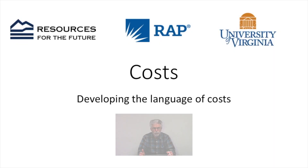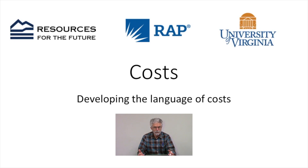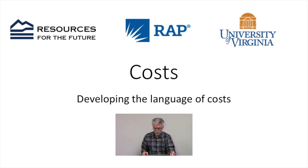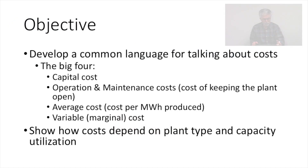Our purpose in this module is to develop a language of cost that we can use for thinking about when we want to use different generating assets, or when we might want to build new generating assets. But in order to get to those really important questions, the first thing we have to do is reach agreement on what we mean by costs. So we're going to spend a lot of time developing a language of costs and being very clear about what we mean by different kinds of costs and when we use different kinds of words to describe costs.